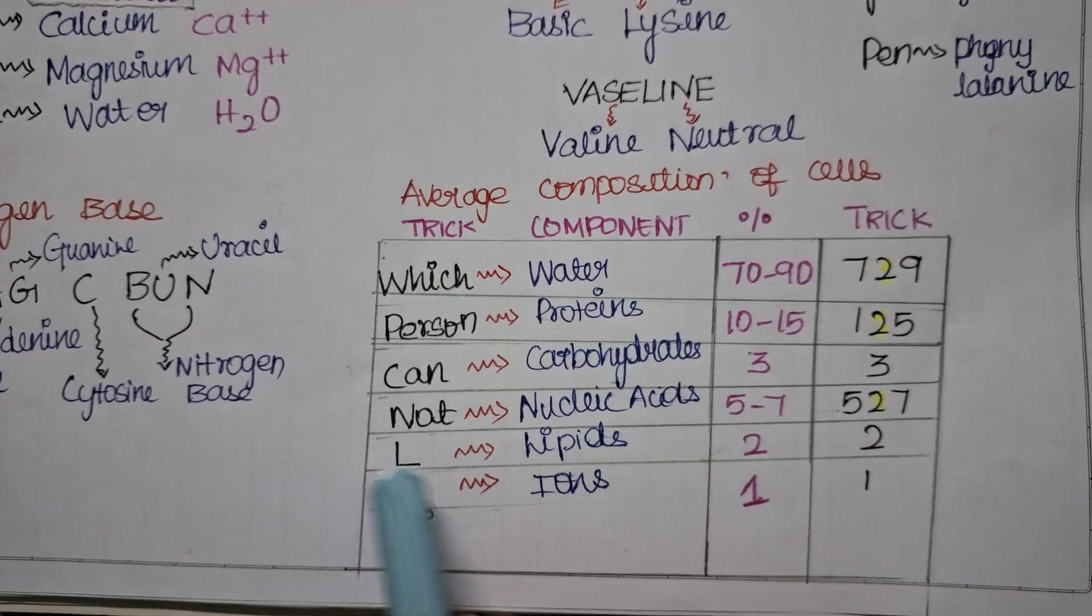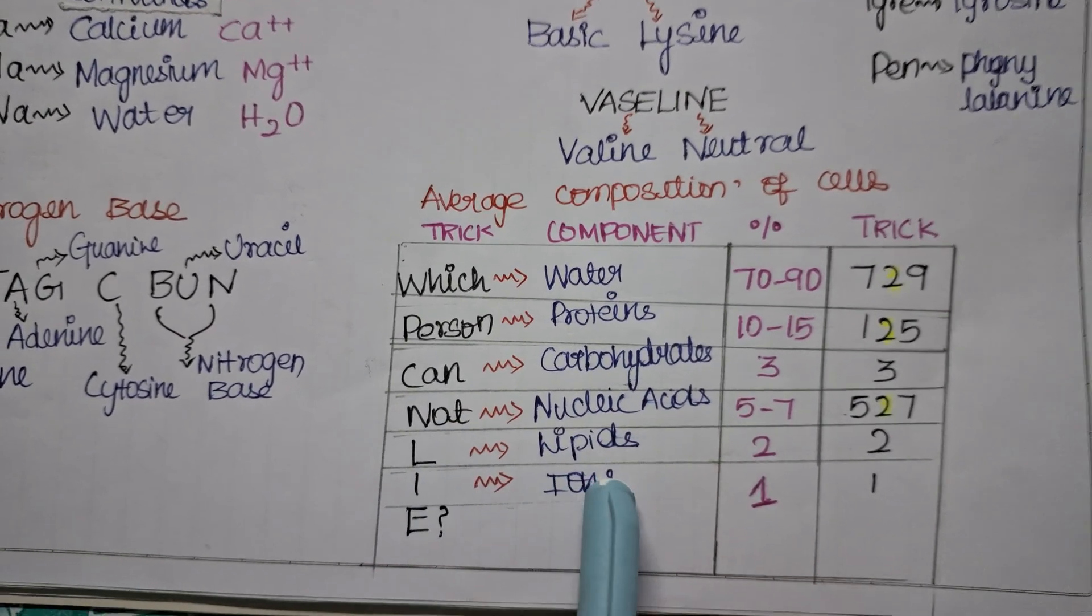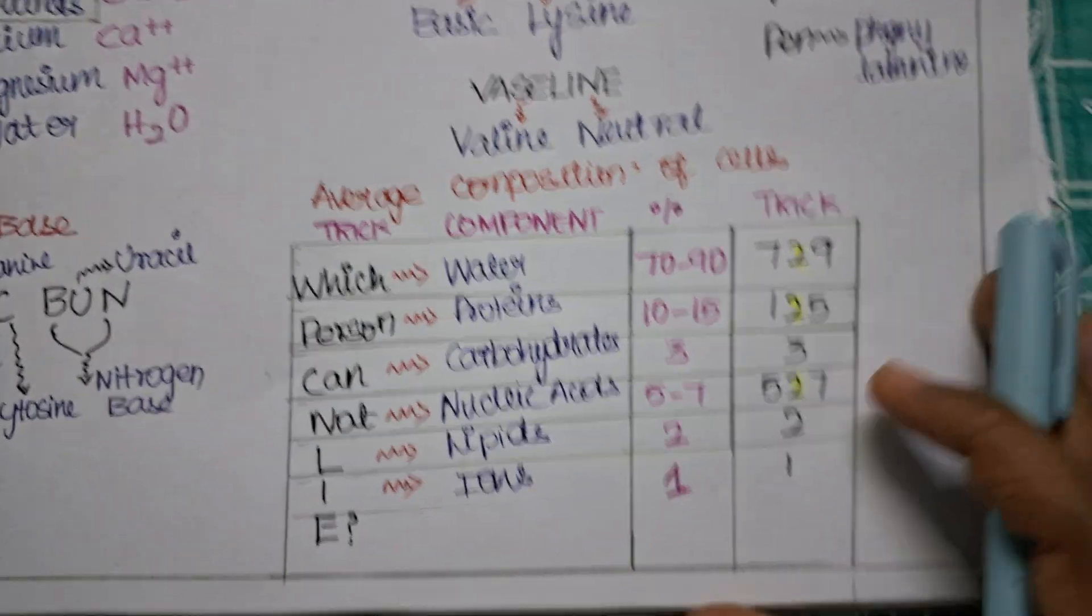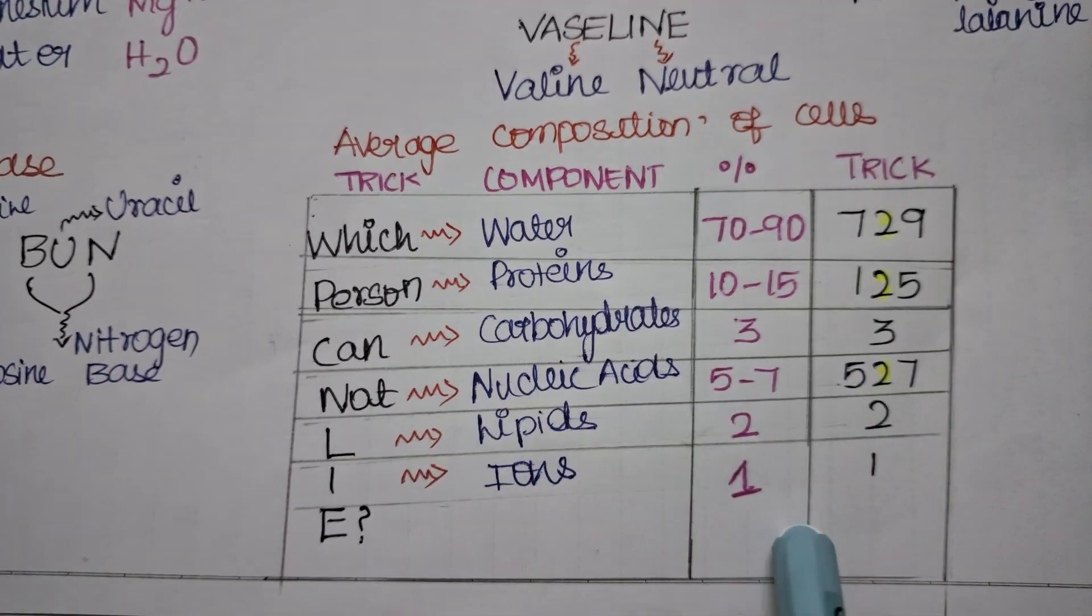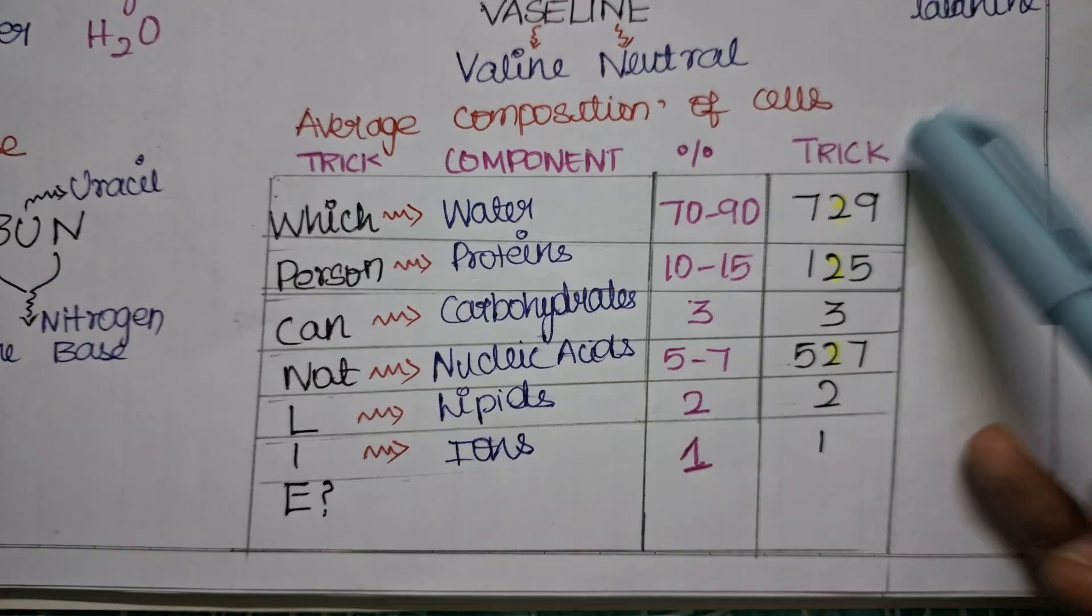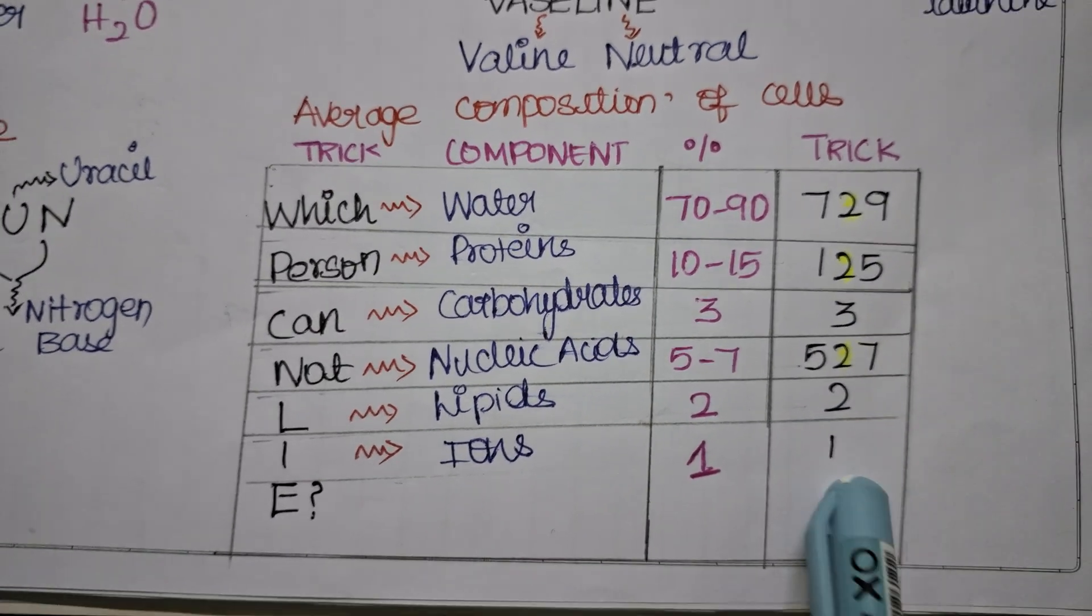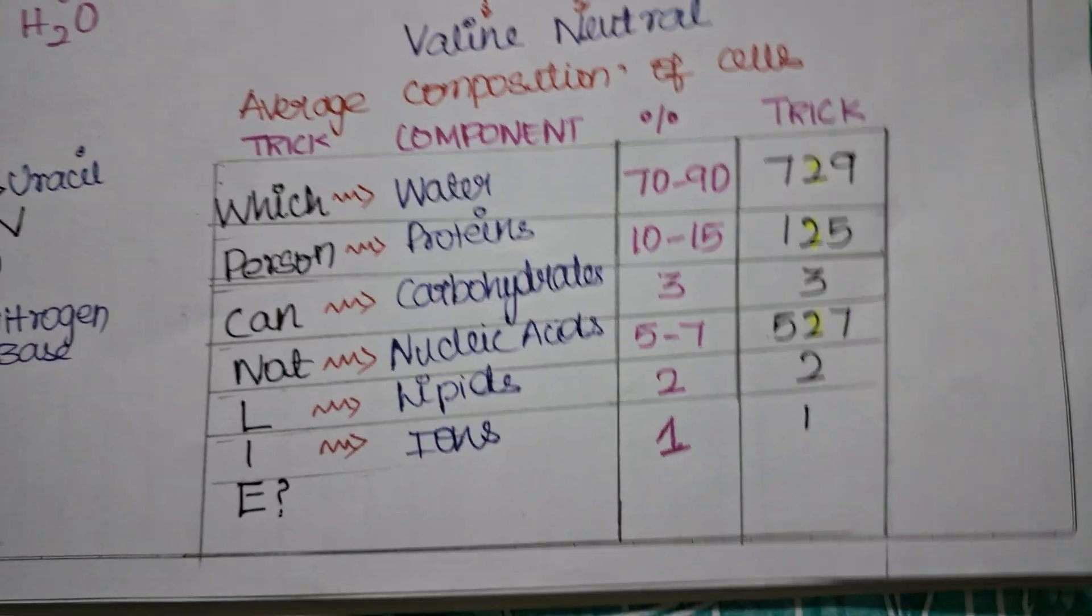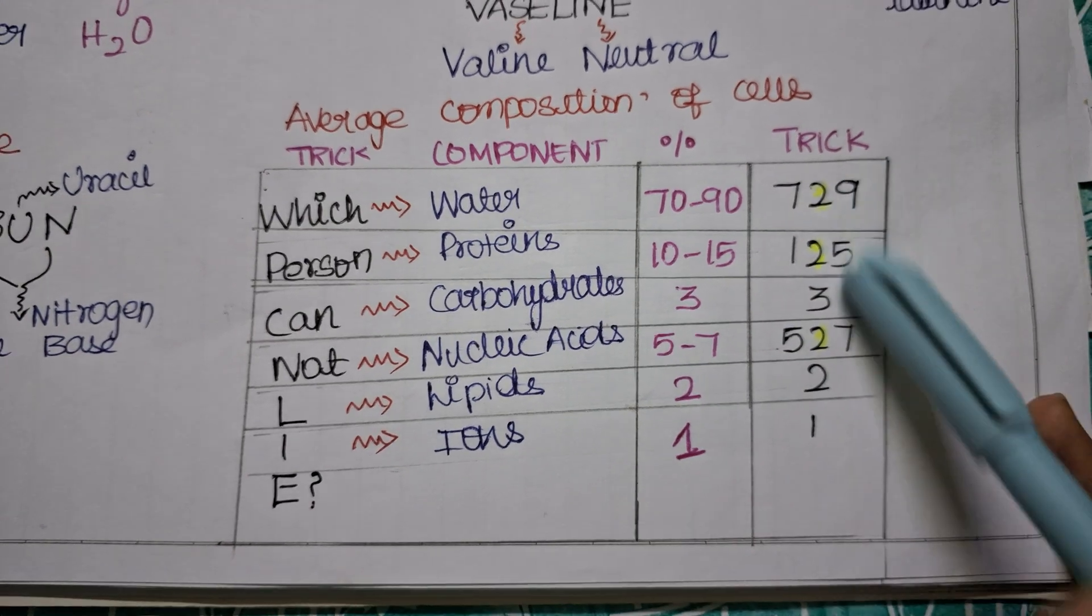So the trick is: WHICH - water, PERSON - protein, CAN - carbohydrates, NOT - nucleic acid, L - lipids, I - ions, E for nothing. Which person cannot lie. So these are the average percentage of their composition. This trick I have made, it might be difficult also, but just have a look. If you find it easy you can memorize.